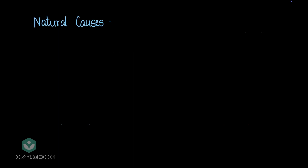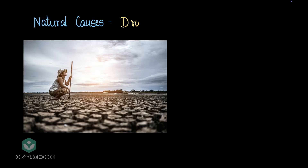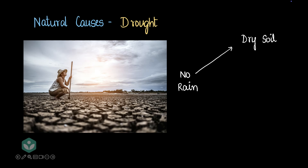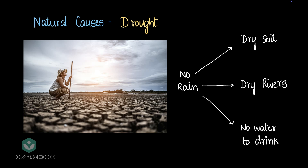The largest reason for famines in the entire history of mankind has been drought. Drought is a situation where we have no rain over a particular region for a long time — it could be one year or two years of no rain. That kind of situation causes very dry soil, which makes the soil infertile. It leaves the rivers dry and can lead to a shortage of drinking water, affecting the crop and the food supply.